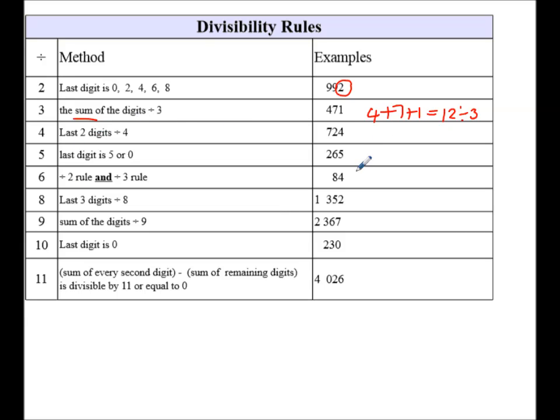Divisibility by 4, the last two digits must be divisible by 4. 4 goes into 24, 6 times. Divisibility by 5, the last digit must be a 5 or a 0. So that number is divisible by 5.